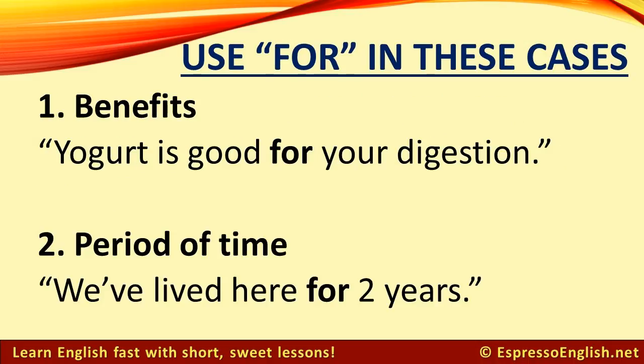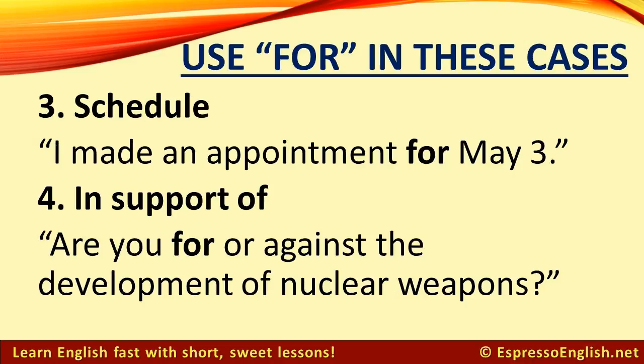Use 'for' in these cases: for benefits — for example, 'Yogurt is good for your digestion.' Use 'for' when talking about a period of time — for example, 'We've lived here for two years.' You can also use 'for' when talking about scheduling — for example, 'I made an appointment for May 3rd.'